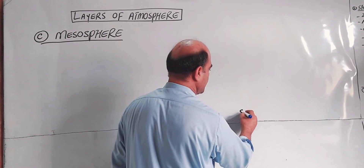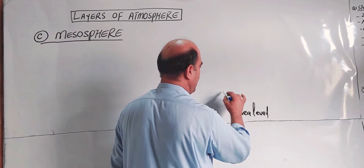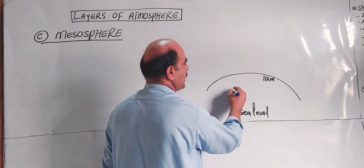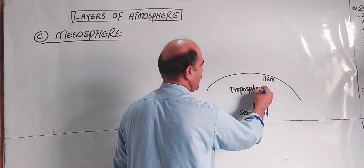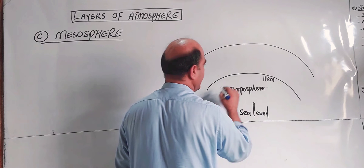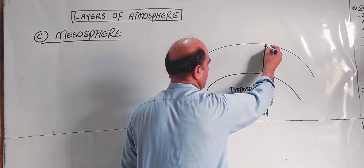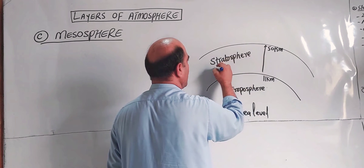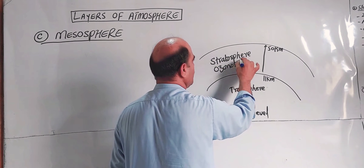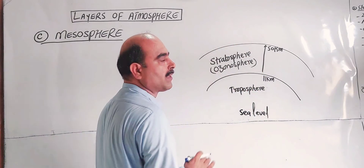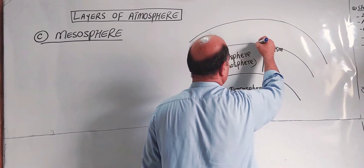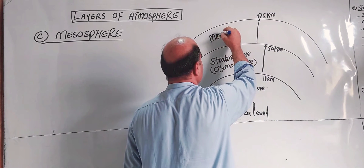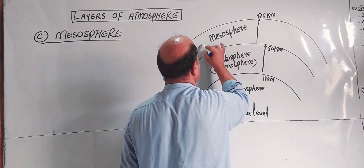Now for the third layer, let's look at the diagrammatic representation. From sea level, up to 11 km is the troposphere. Above 11 km and up to 50 km is the stratosphere, where ozone is present. Above 50 km and up to approximately 85 km is the third sphere — this is called the mesosphere.